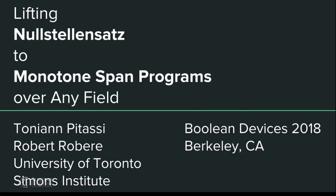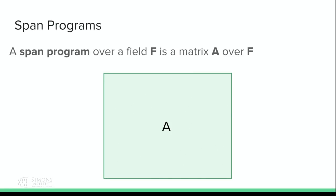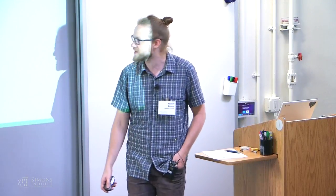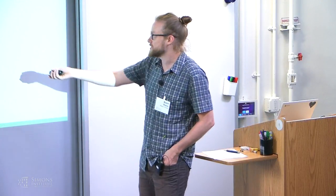I feel like I've given a similar talk to many of you before, so hopefully this won't be too boring. Today I'm going to be talking about lifting nullstellensatz sets to monotone span programs over any field. Let me first start by telling you what a span program is. This was mentioned in Avi's talk yesterday about how these were invented using the fusion method. So what is a span program?